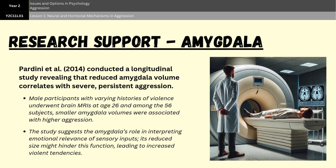Let's start our first bit of evaluation by looking at evidence for how the amygdala influences aggression. In 2014, Pardani et al. explored the connection between the size of the amygdala and aggressive behavior. They conducted a longitudinal study involving men with varying histories of violence, tracking them from childhood into adulthood. At the age of 26, these participants underwent brain scans. The findings were clear: those with smaller amygdala volumes were more likely to exhibit higher levels of aggression and violent behavior. Importantly, this relationship held true even after the researchers accounted for other possible factors. The amygdala plays a key role in assessing the emotional importance of perceived information, and when it is smaller, that ability is compromised, making a violent response more likely.